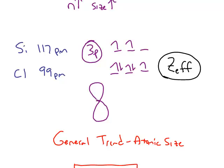Instead, what we have to do is look at the effective nuclear charge. A major difference between silicon and chlorine is how many protons they have. The atomic number of silicon is 14, where the atomic number of chlorine is 17.